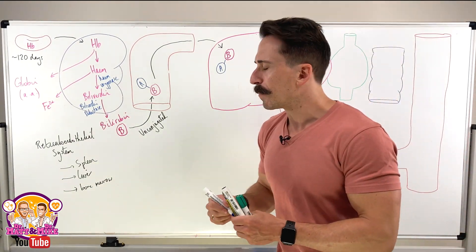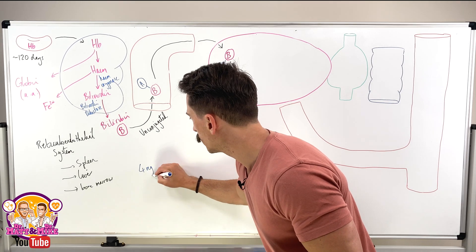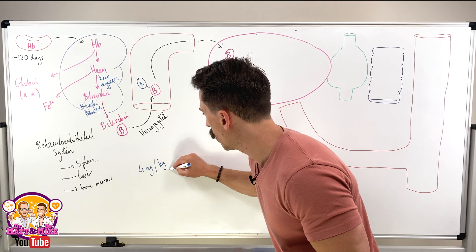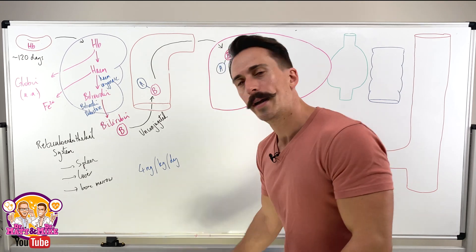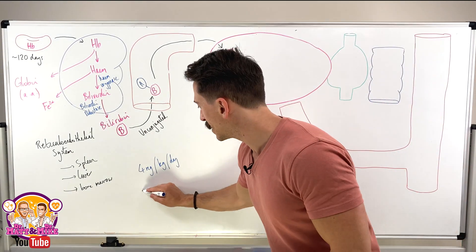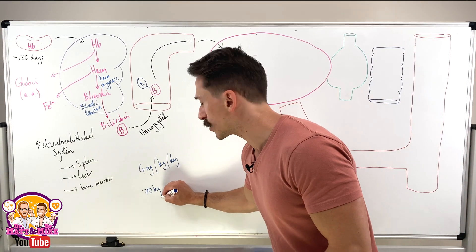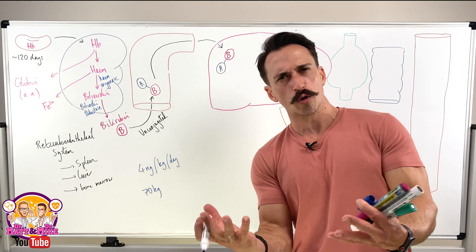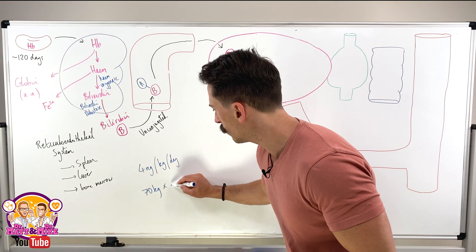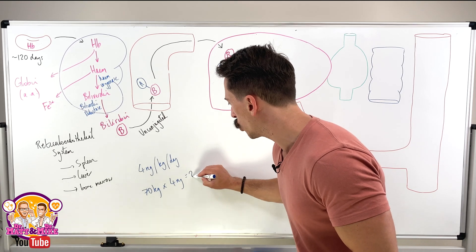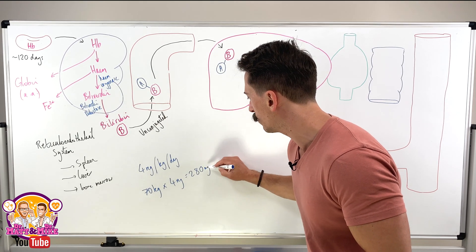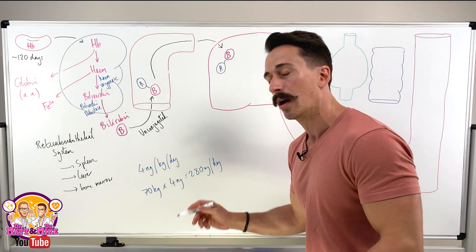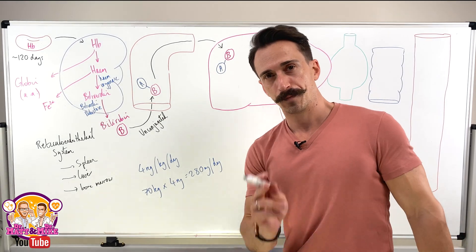What you'll find is we make around about 4 milligrams per kilogram per day. Now I am a 70 kilogram male. So 70 kilograms times 4 milligrams is going to be 280 milligrams per day of bilirubin I produce. That's important.